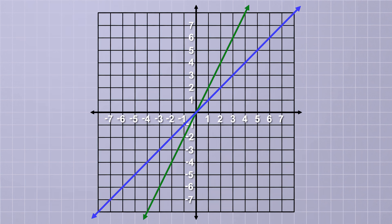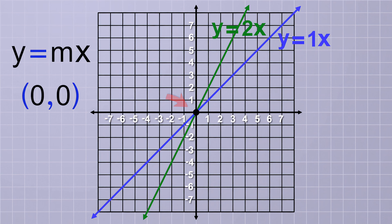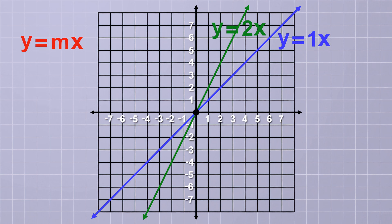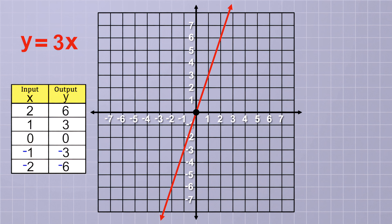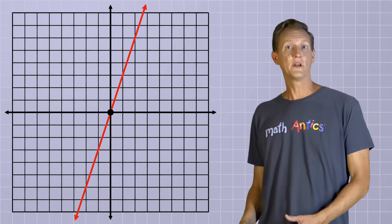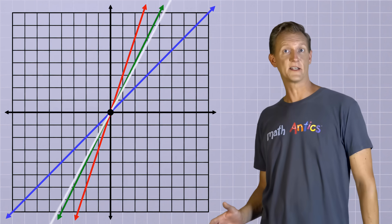Despite their differences, the lines y equals 2x and y equals 1x have something in common — they both pass through the origin point of the coordinate plane. Because no matter what value we pick for m, if x is 0, the output y will also be 0, since anything multiplied by 0 is 0. What about if we let m equal 3? That gives us a function table and a line where for every input value of x, the output y is tripled, but it still passes through the origin. Each time we pick a bigger number for m, our line is getting steeper.